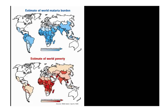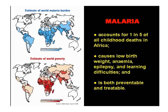Malaria is currently a disease associated with poverty. These two maps show an almost exact coincidence of the burden of malaria and the burden of poverty, concentrated, as you'd expect, in developing countries. Malaria accounts for one in five of all childhood deaths in Africa. Malaria causes low birth weight, anemia, epilepsy, and learning difficulties, but it's both preventable and treatable.